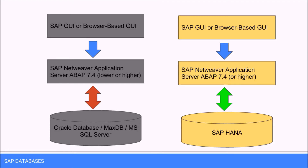Here we have two diagrams. Both of them represent the architecture for a SAP system. At the top we have the SAP graphic user interface or a browser-based GUI that connects to the SAP Netweaver application server, which constantly communicates with a database. Before SAP HANA, that database was an Oracle database,